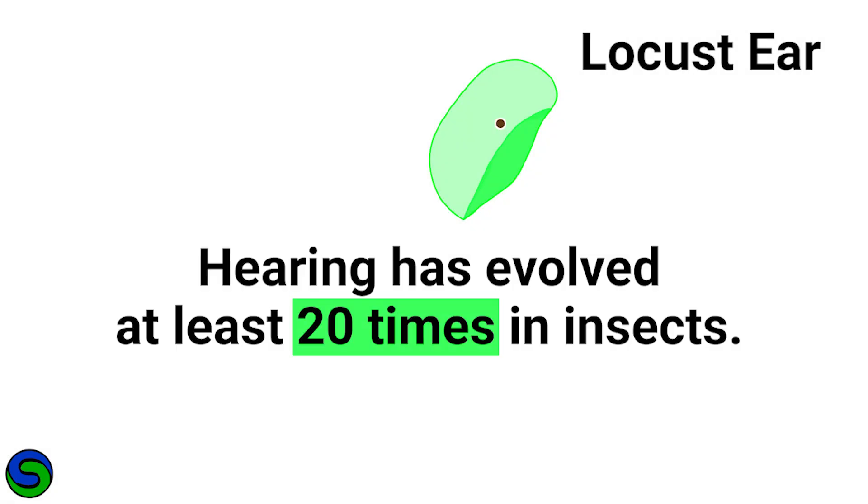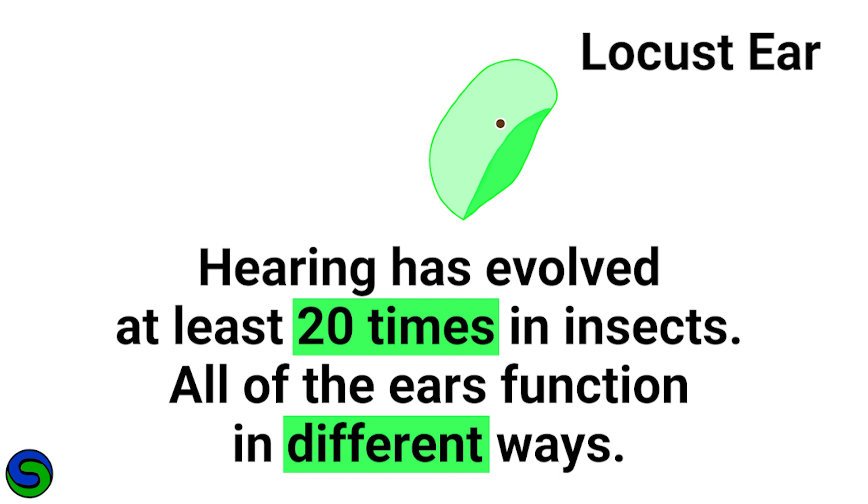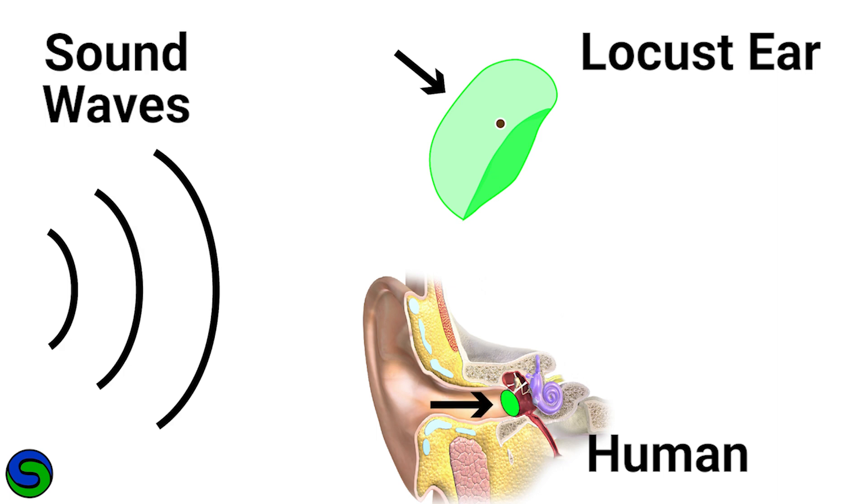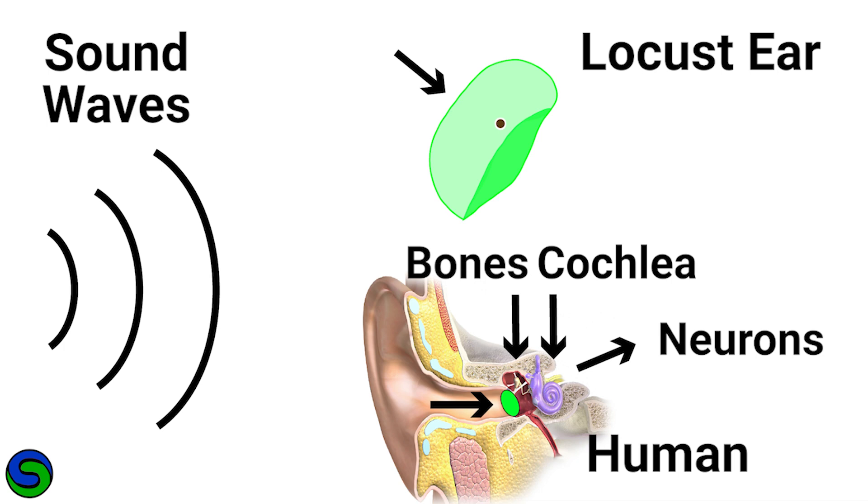First, I want to point out that hearing has evolved independently 20 times in insects, so all of the ears function in different ways. Comparing the locust ear to the human ear, the sound waves first hit the tympana or eardrum, but humans have bones that then amplify the signal, sending it to the cochlea for frequency discrimination that is then picked up by the neurons.